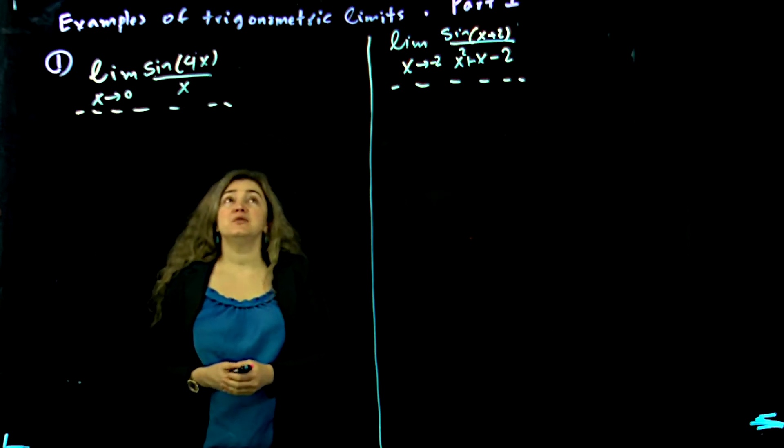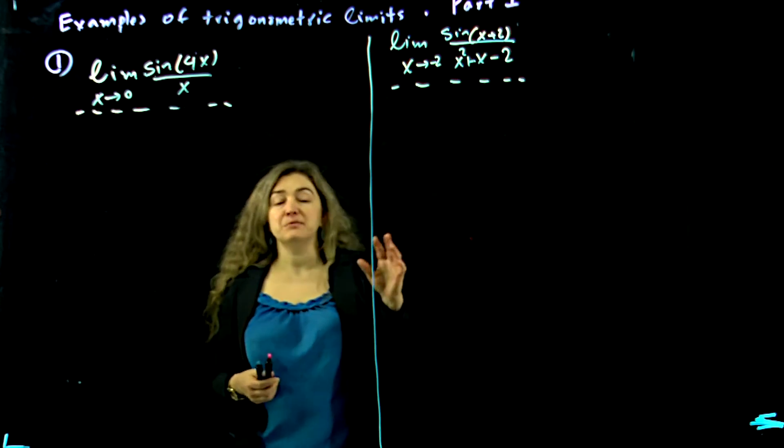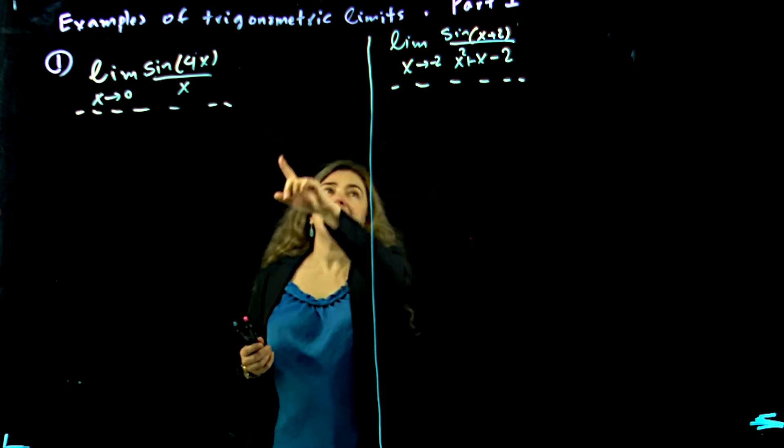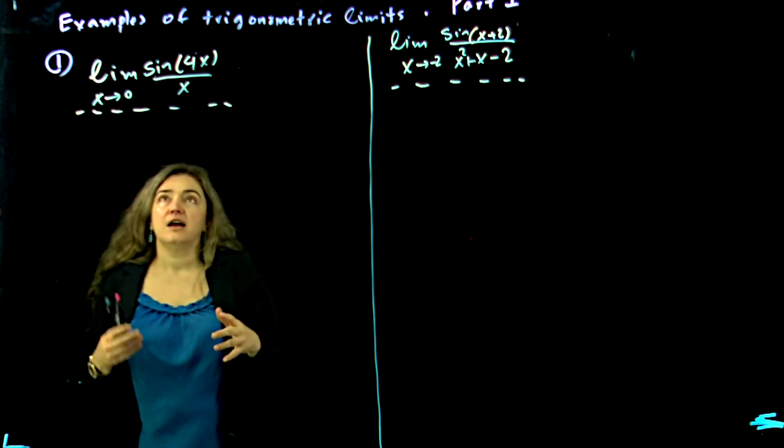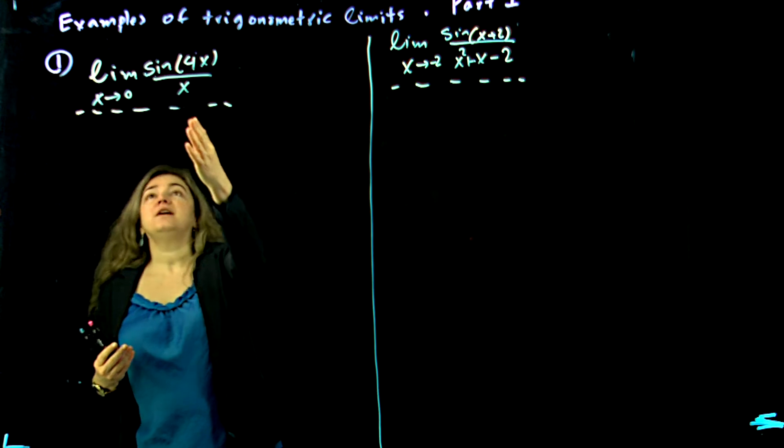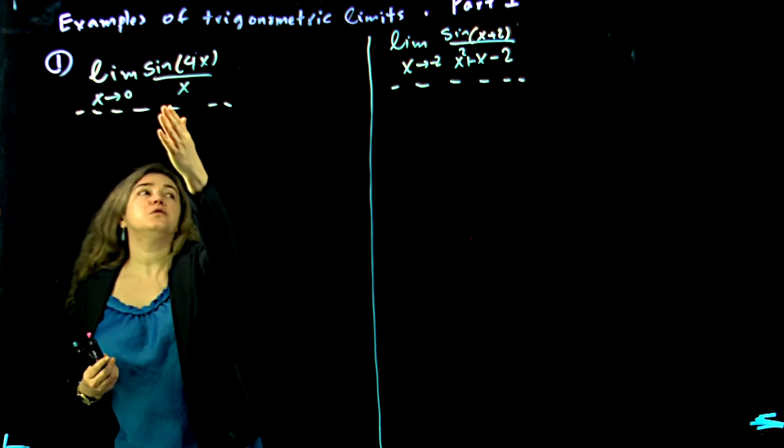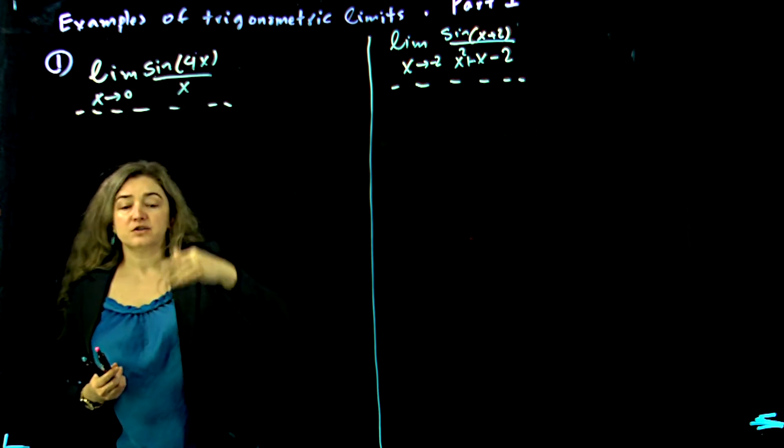Hi, we're doing some examples of trigonometric limits. This one is part one. I have two examples written in here and start with the first one: limit as x approaches 0 of sine of 4x over x.